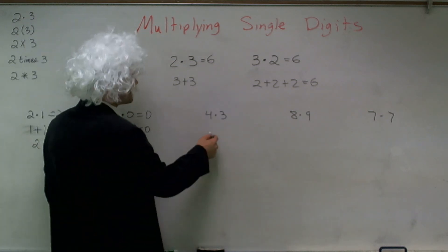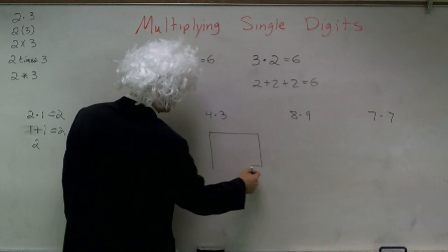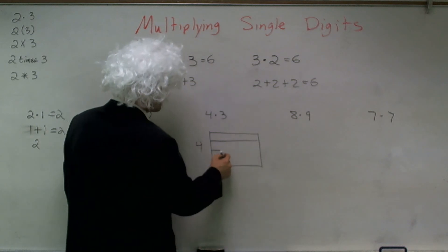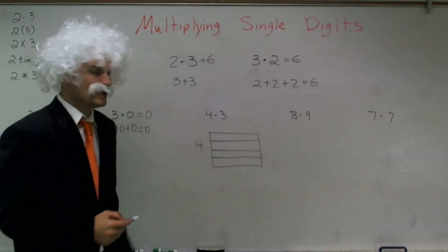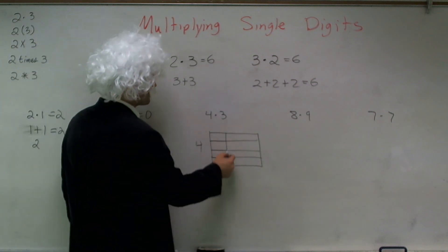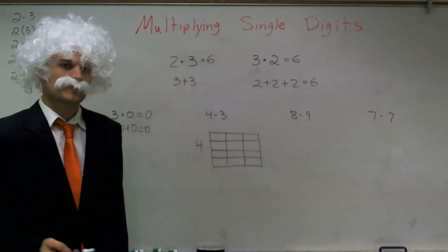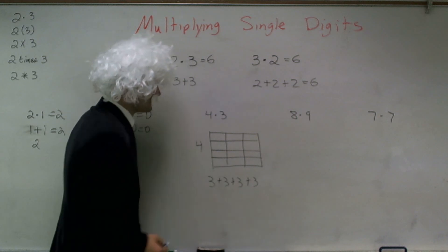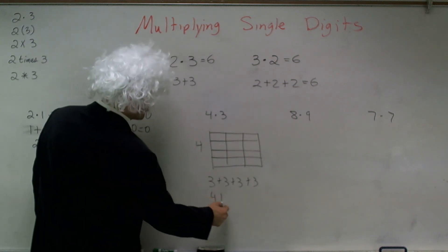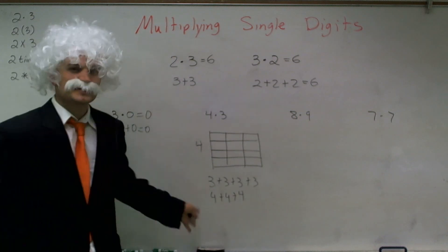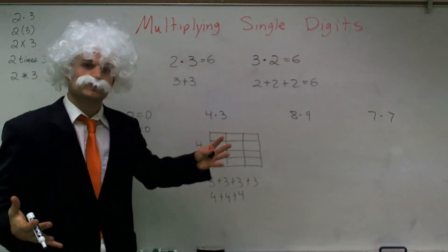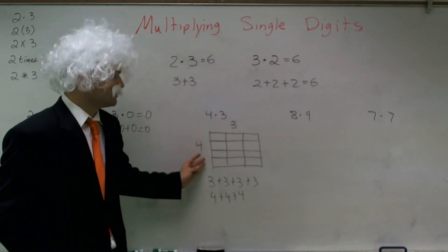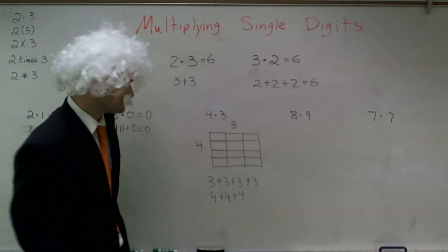But let's kind of look at this a different way. And I want to show you guys another way to look at your multiplication. Let's say I have something, and I'm going to have 4 this way, so I have 4 units. All right? Then I have 3 sections going the other way. So what this represents is the same thing as me doing 3 plus 3 plus 3 plus 3, or we could do 3 sets of 4, which would be 4 plus 4 plus 4.